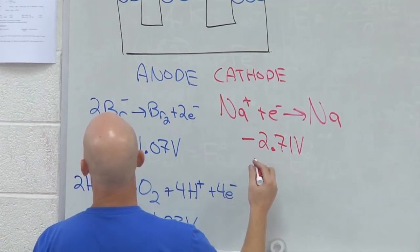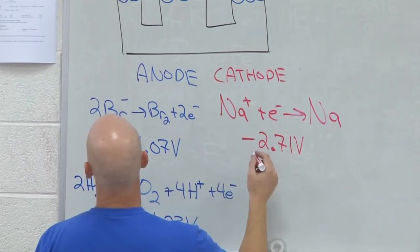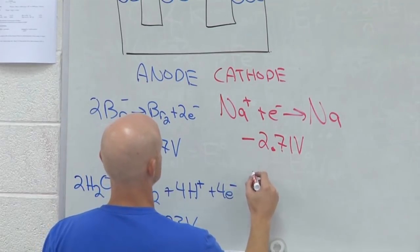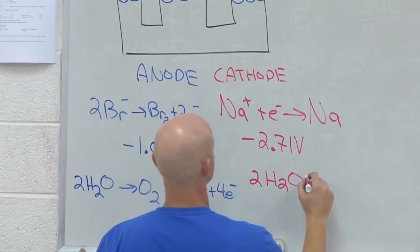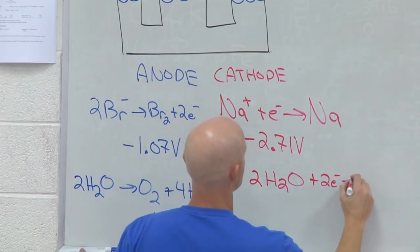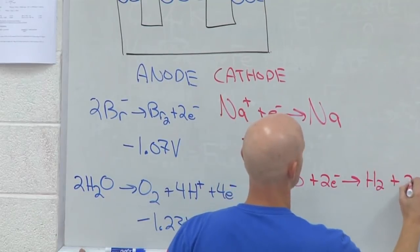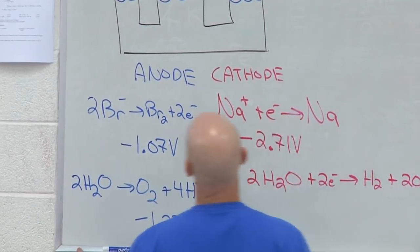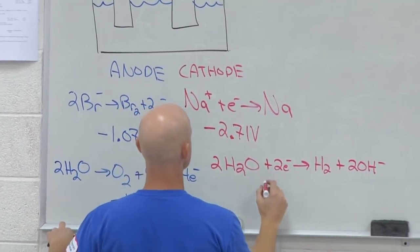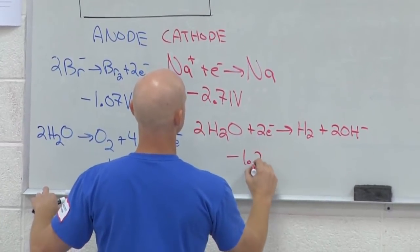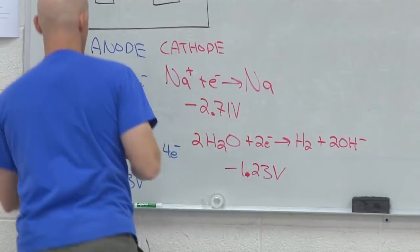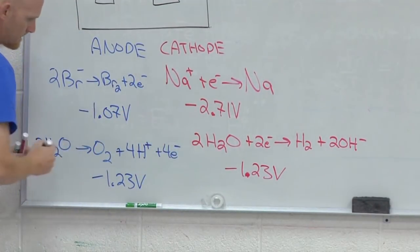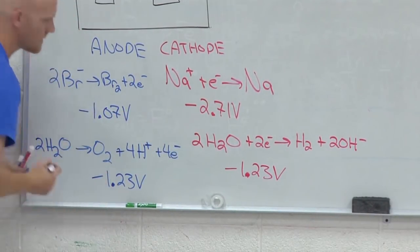And water can also get reduced. So that's a possible reaction or half reaction at the cathode as well. And in this case, it produces elemental hydrogen. Also produces hydroxide, but the elemental hydrogen, we still get an element at least one way, shape, or form.